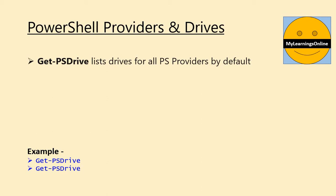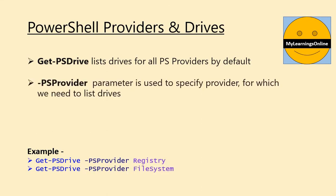We can list Drives in a provider by using the command get-psdrive. The PSProvider parameter is used to specify the provider name for which we need to list Drives. In this example, in the first command, we are trying to list Drives of PSProvider registry.